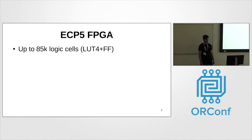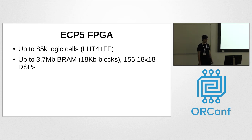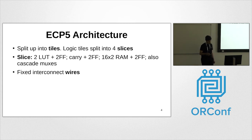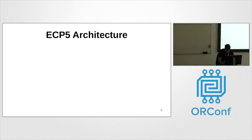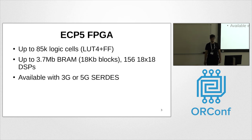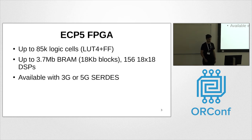The ECP5 has up to 85K logic cells. It's a LUT4-based architecture, so the LUTs have 4 inputs, plus there's a flip-flop in every logic cell. Up to 3.7 megabits of block RAM, 156 DSPs — great for signal processing. It also has 3 or 5 gigabit SerDes, which no current open source tools support, but supporting that would be totally unique — enabling things like PCIe.